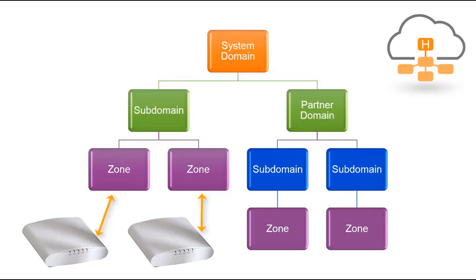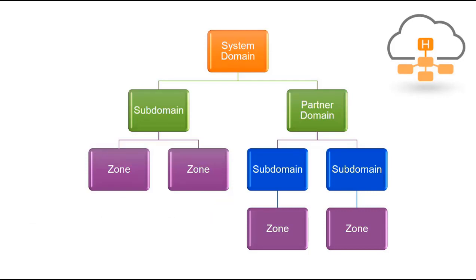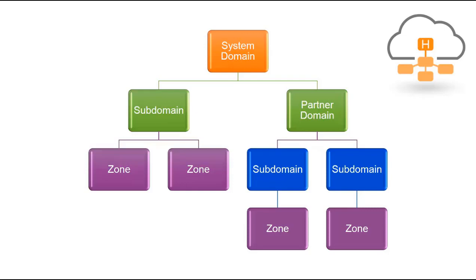Maybe you'd like to deploy zones with different firmware in order to support older access point models or test features. When access points successfully register to the controller, they will eventually be placed in an access point group inside a zone within a subdomain. The access points will download the system configuration settings defined within the zone, and those settings will be applied to the access points. Because of this, it is logical to configure the zone settings prior to having the access points join the zone.